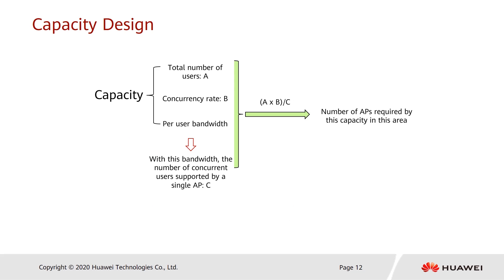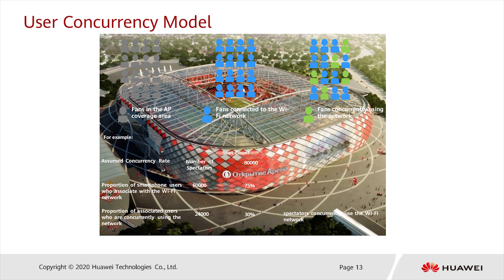Next, let's look at capacity design. The factors affecting capacity include the total number of users, concurrency rate, and per-user bandwidth. A user concurrency model helps understand the concurrency rate. For example, in a large stadium with 80,000 people, 60,000 use smartphones to connect, and 24,000 are concurrently using the network — giving a total concurrency rate of 24,000 divided by 80,000, which is 30%. For large open-area projects, the concurrency rate is usually not very high.